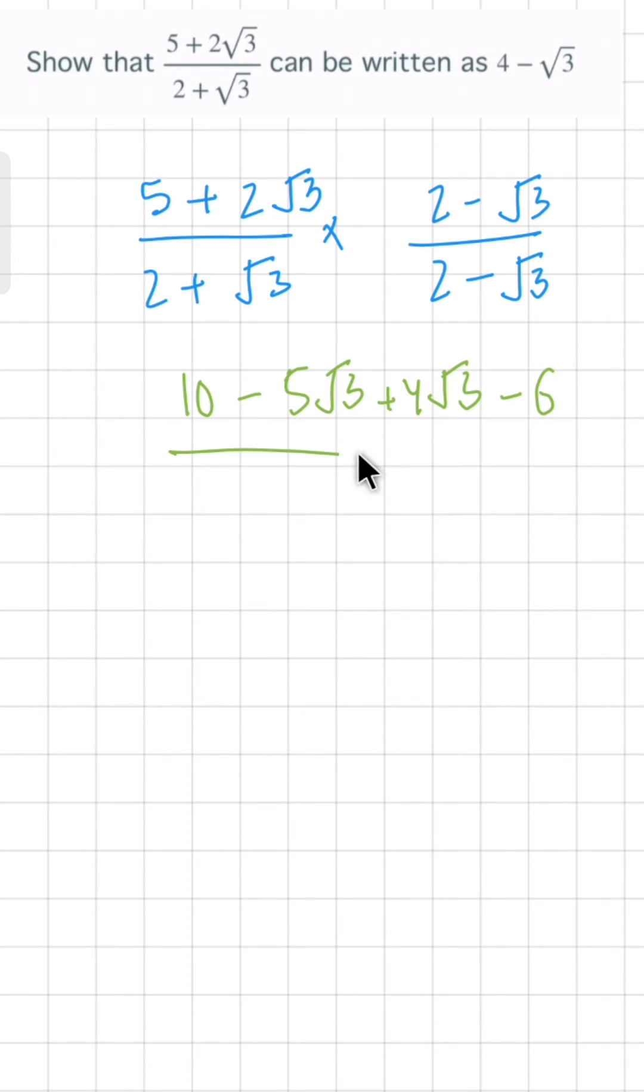In the denominator, 2 + √3 and 2 - √3 looks like (a + b) and (a - b). You know (a + b)(a - b) = a² - b². This is an identity - please memorize this if you don't know it.